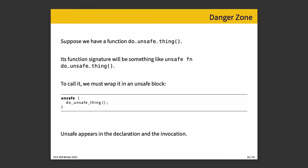Suppose we have a function that says it does something unsafe — it does one of the things like accessing a mutable static variable or accessing fields of a union. And it says in its function signature: unsafe. So its signature is `unsafe fn do_unsafe_thing`. To call it as the caller, you have to wrap it in an unsafe block. Everything inside the curly braces is unsafe, which allows you to call an unsafe function.